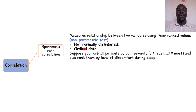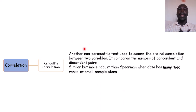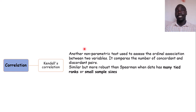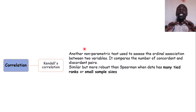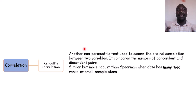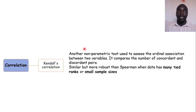Spearman's rank correlation is also used when you have ordinal data — for example, pain severity on a scale of 1 to 10. Next, we have Kendall's Tau B correlation, which is another non-parametric test similar to Spearman's rank correlation, but used when you have many tied ranks or small sample sizes.